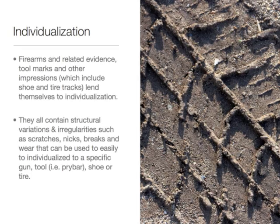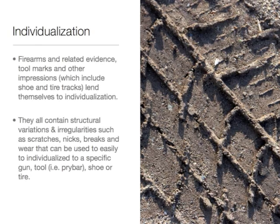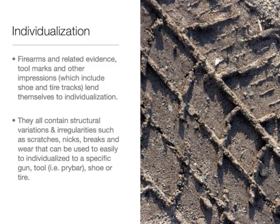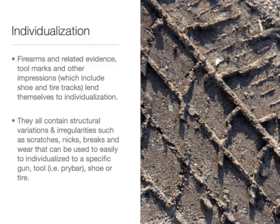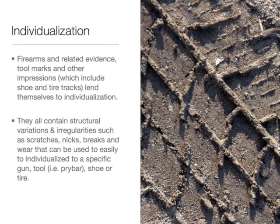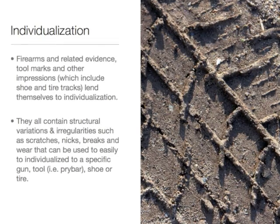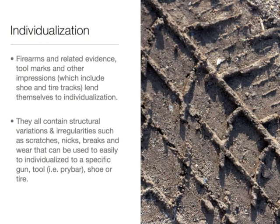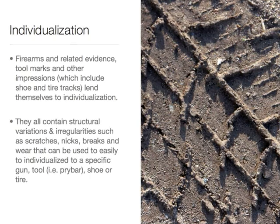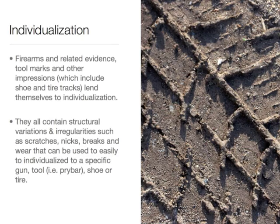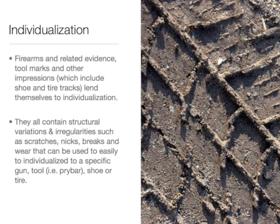Firearms and related evidence, tool marks, and other impressions — which includes shoe marks and tire tracks — lend themselves to individualization. They all contain structural variations and irregularities such as scratches, nicks, breaks, and wear that can be used to easily individualize to a specific gun, tool, shoe, or tire.